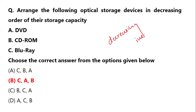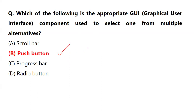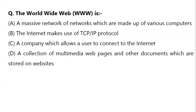Which of the following is the appropriate GUI — Graphical User Interface — component used to select one from multiple alternatives? The options are scroll button, push button, progress bar, or radio button. If you want to select one from multiple alternatives, the button used is called a push button. This question has appeared two to three times in the exam, so you have to be very careful when this question is asked.